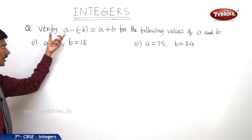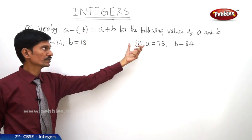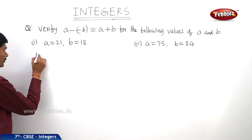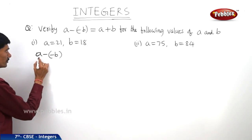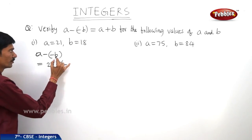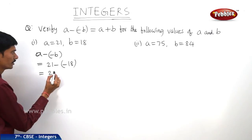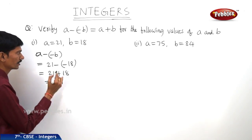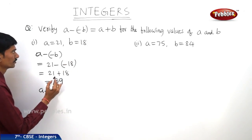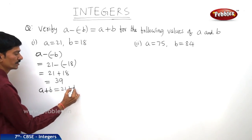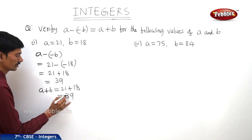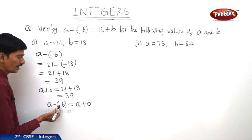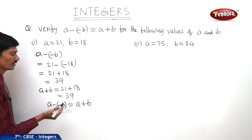Let us see the next question. Verify a minus (minus b) equals a plus b for the following values of a and b. The first case: a equals 21 and b equals 18. Now according to the LHS, a minus (minus b) equals 21 minus (minus 18), which equals 39. And when you take a plus b, this equals 21 plus 18, which also equals 39. So we can write a minus (minus b) equals a plus b. When you subtract a negative integer on the number line, we move to the right side, which means we should add the number.